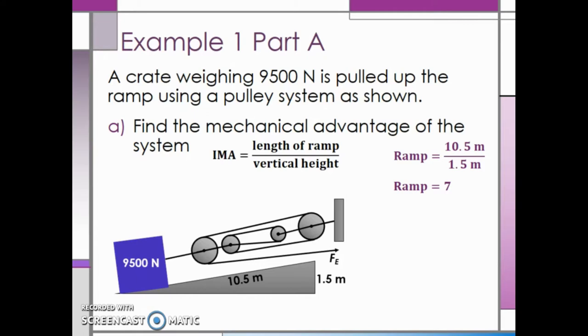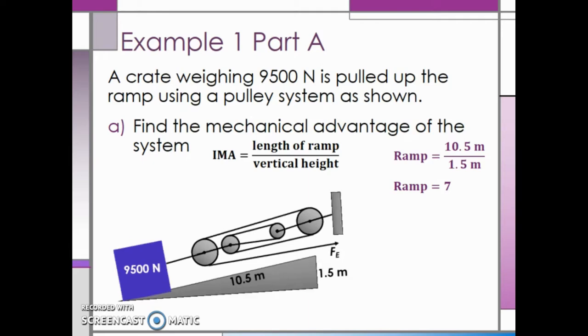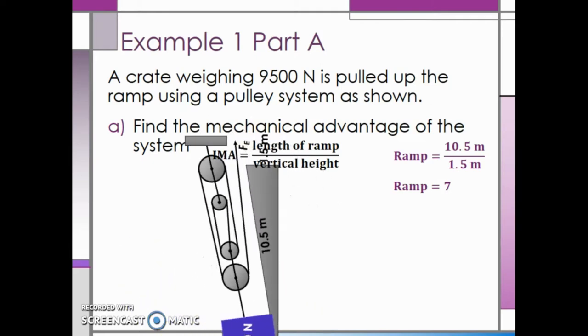Now we need to find the mechanical advantage of the pulley. It can be helpful to visualize the pulley system as suspended from above instead of from the side. Now we can easily count the number of strands holding the crate up. Since the effort force is pointing up, this counts as one strand. Then we round the pulley closest to the crate and count strand 2. Round the top pulley and count strand 3. Round the second to the bottom pulley and count strand 4. And round the last pulley and count strand 5.